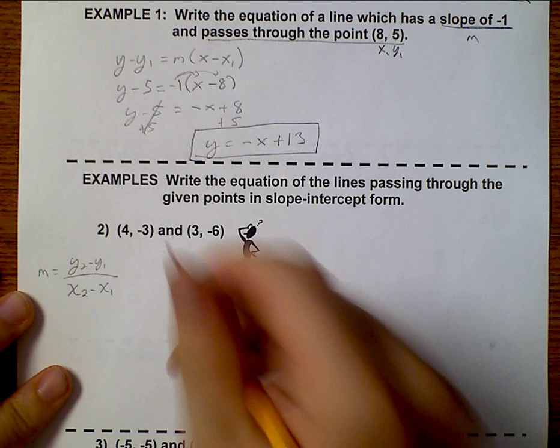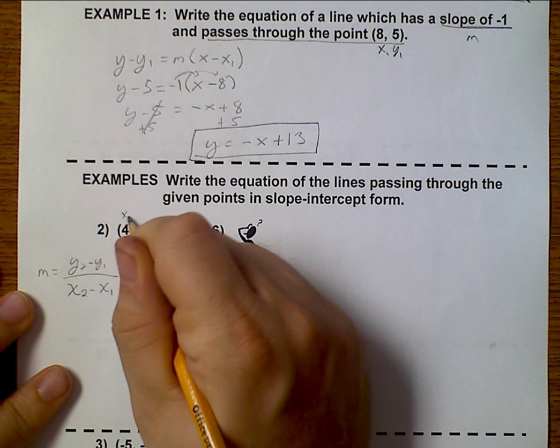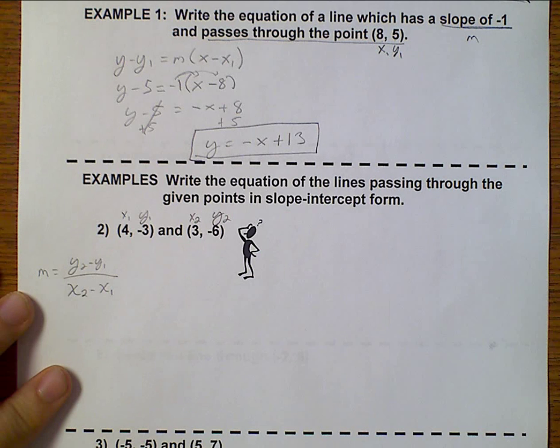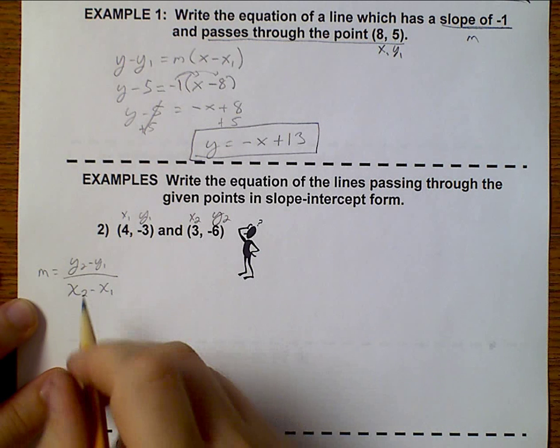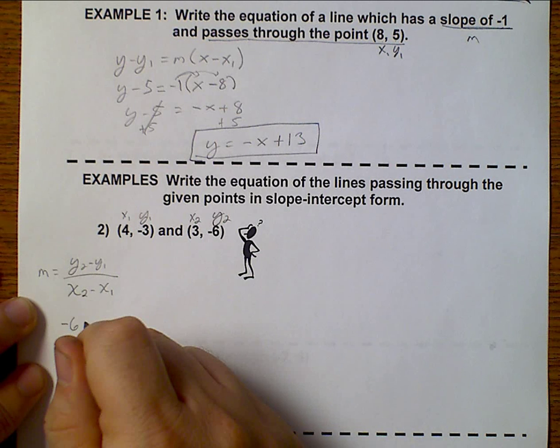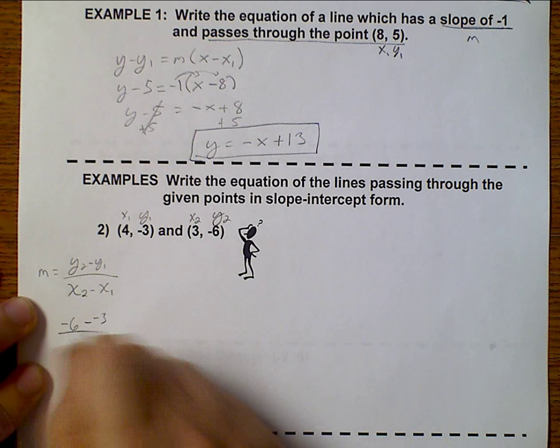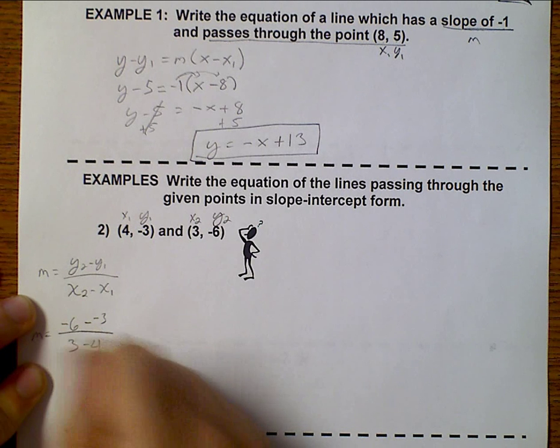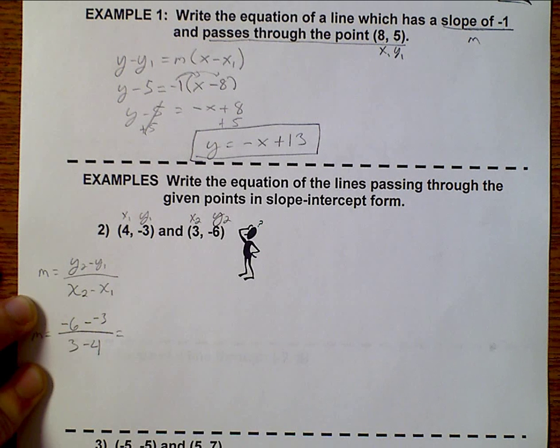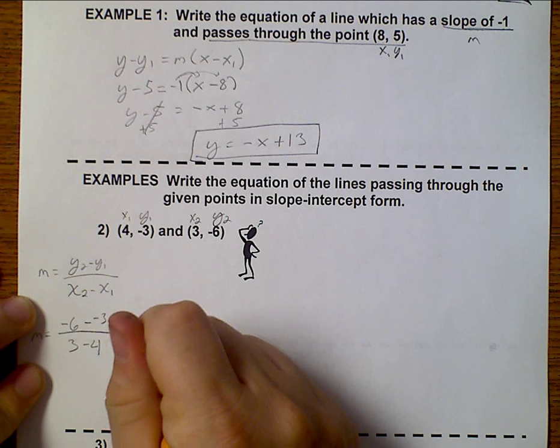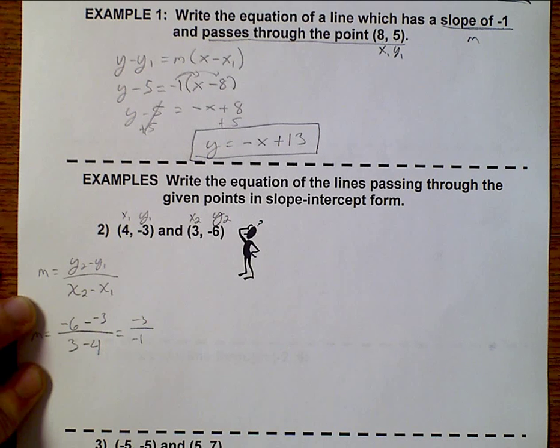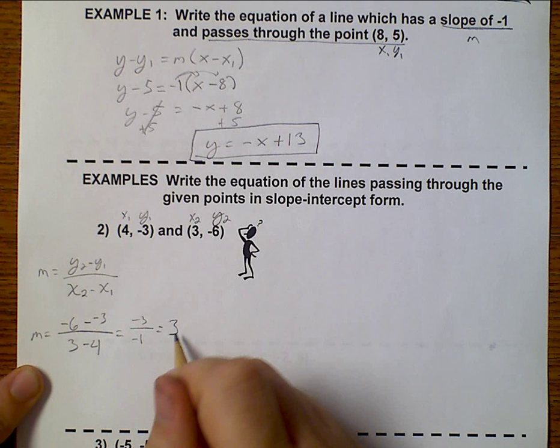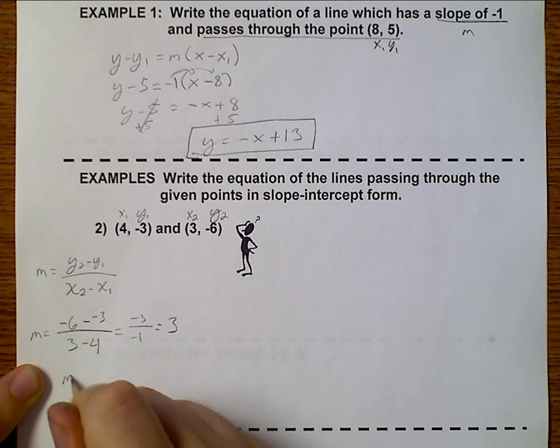So this is x1, y1, x2, y2. So this would be negative 6 minus negative 3, over 3 minus 4. Negative 6 minus negative 3 is negative 3. And 3 minus 4 is negative 1. And so this just equals positive 3. So that means m equals 3.